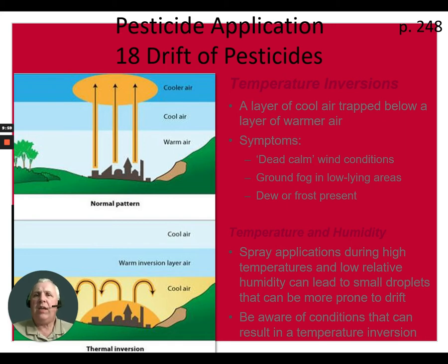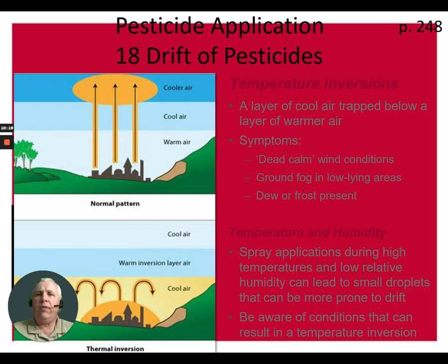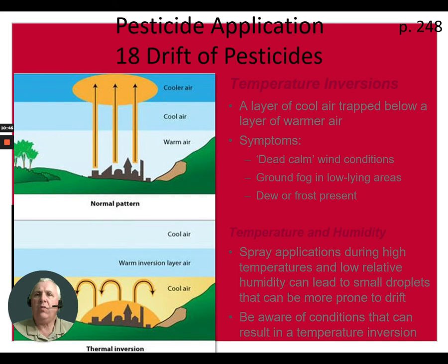How do we recognize a temperature inversion? It often happens in the evening when the sun is setting and there's dead calm. You'll see fog in low-lying areas, dew, or frost beginning to form. On a gravel road, dust from a passing vehicle may just hang in the air barely moving — come back 15 minutes later and it's still there. Another clue: smoke from a burning brush pile rises and then hits what looks like an invisible ceiling and starts moving horizontally. Those are signs of an inversion layer — times when you should not spray.